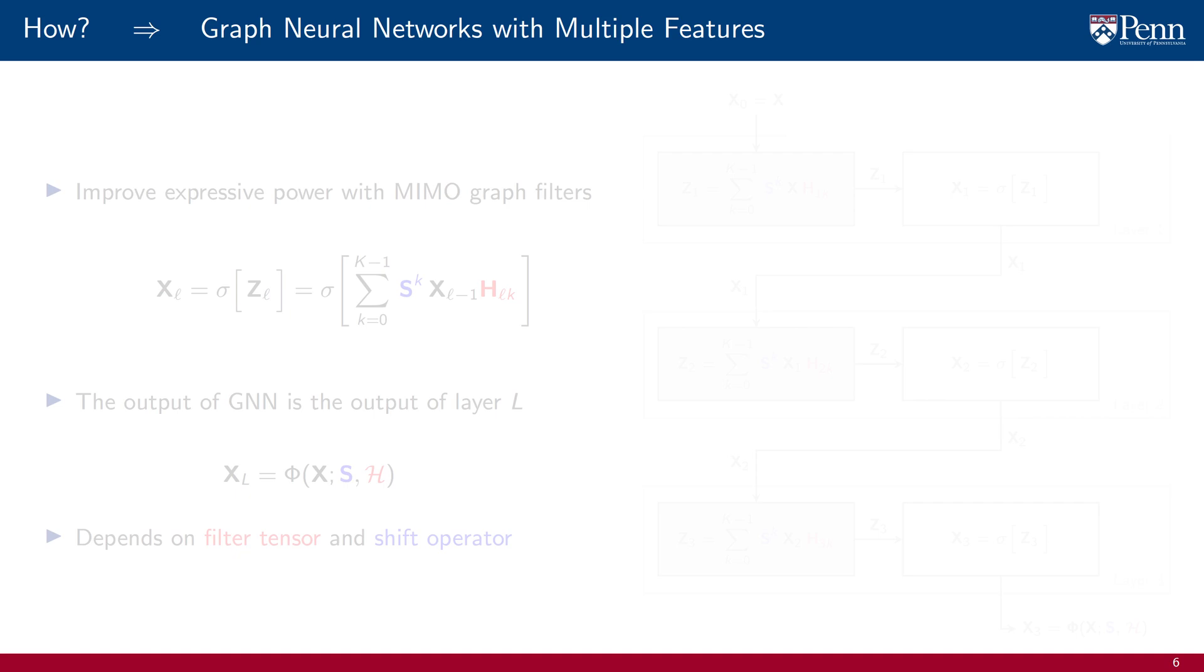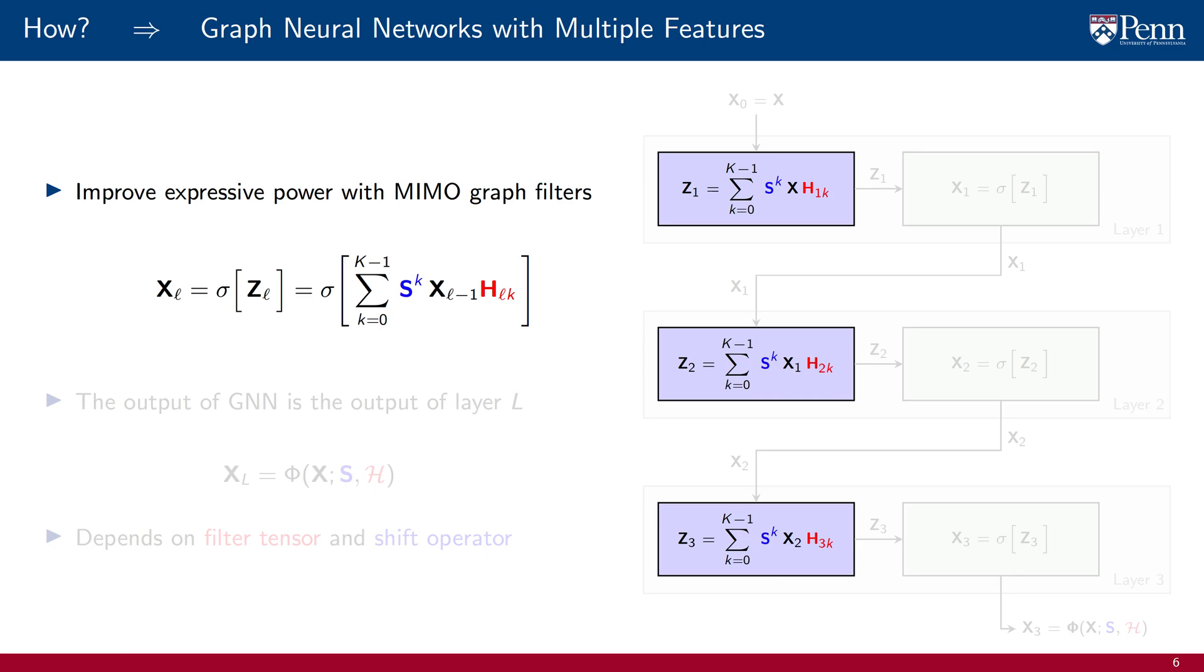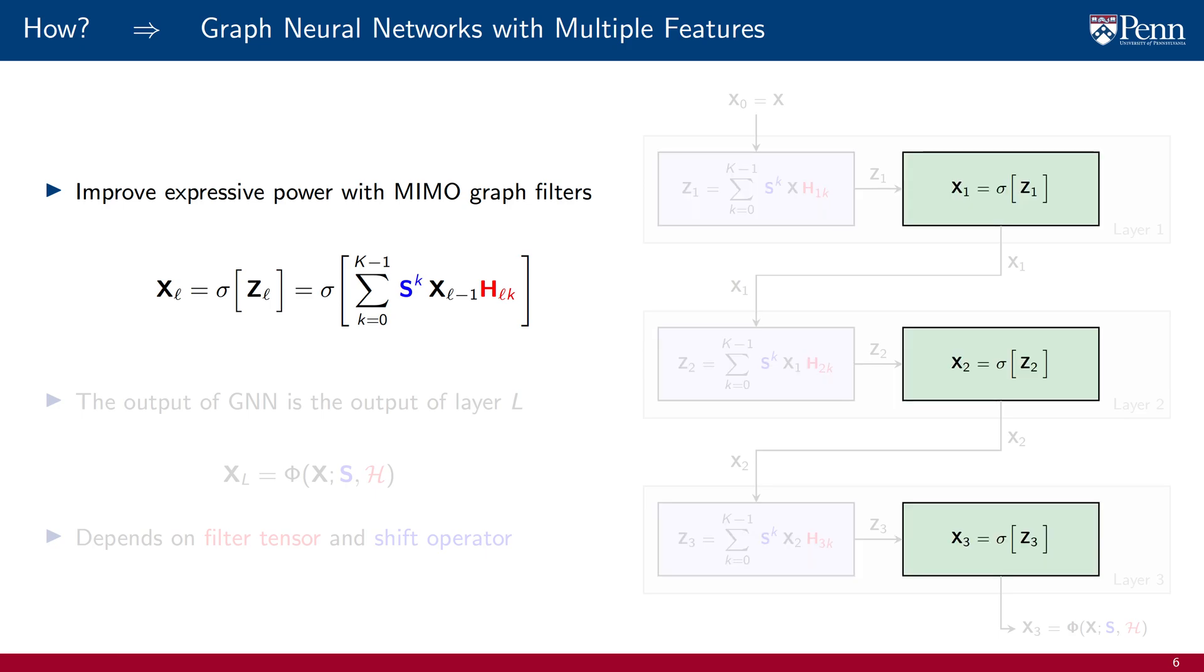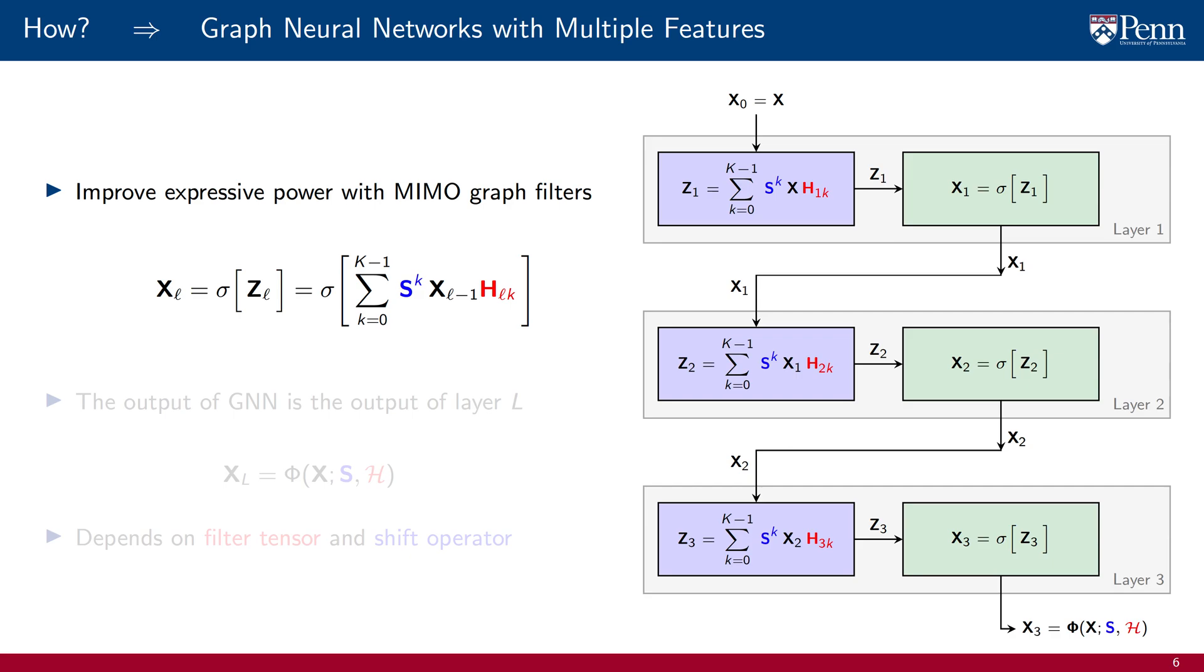These GNNs with single features are interesting conceptual objects, but from a practical perspective, they are pretty useless. The ones we use in practice are GNNs with multiple features. They are the same, except that the filters at each layer are MIMO graph filters that take a collection of features as an input and output another collection of features. But other than that is the same architectures. We stack layers, each of which is the composition of a graph filter with a point-wise nonlinearity. The only modification is that the graph filters are MIMO graph filters. The rest of the processing architecture is the same. In particular, the output of the GNN is still the output of the capital L layer, which is a function of the filter tensor and the shift operator.